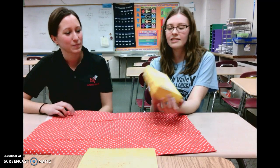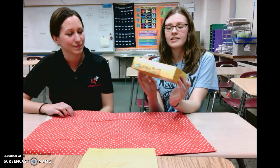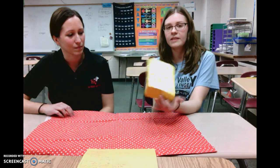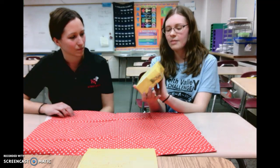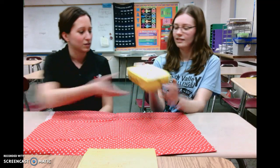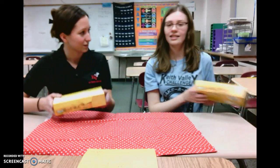Surface area is the sum of the areas of all of the faces of a 3D figure, like this rectangular prism that we have here. How many faces are there? Well, it's a rectangular prism, so there are six faces on this.